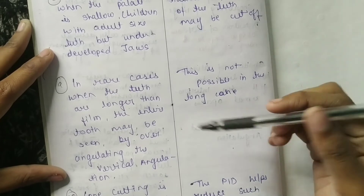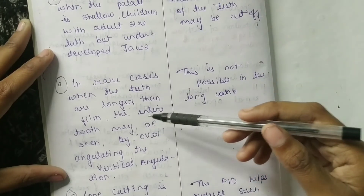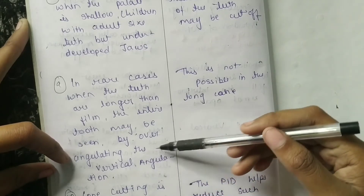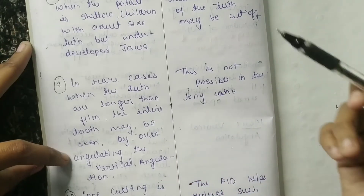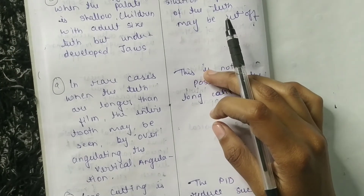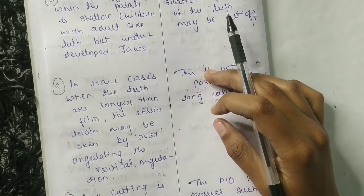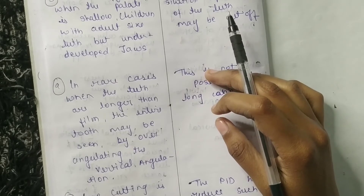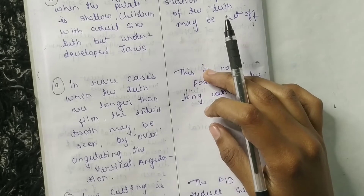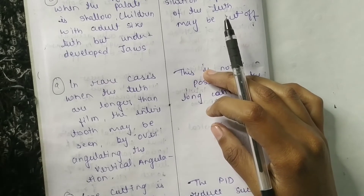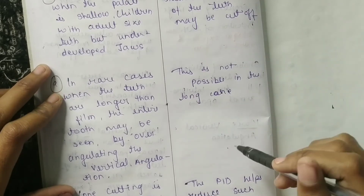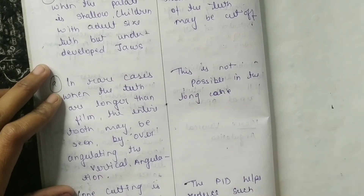The ninth difference: in rare cases when the teeth are longer than the film, in short cone technique you can over-angulate the vertical angulation to see the entire tooth. This is not possible in long cone technique.